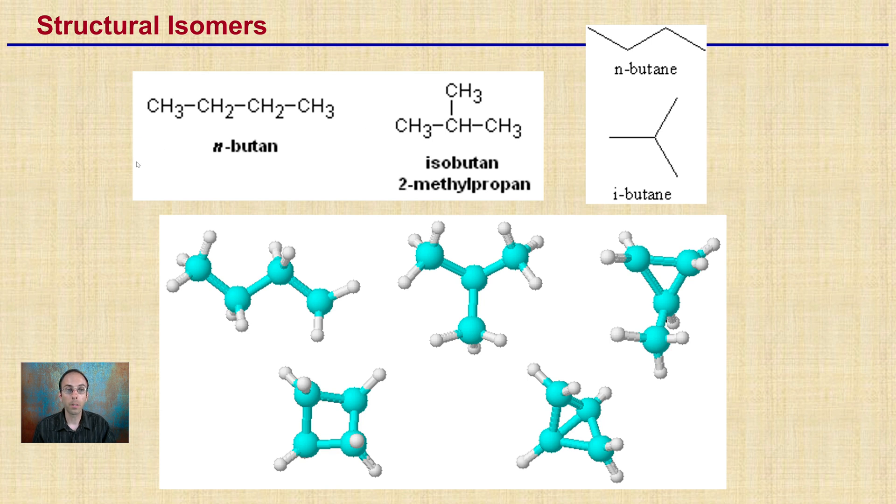Now, structural isomers we see here, n-butane, isobutane, and kind of the carbons are kind of highlighted here in the bright colors. We can see that if you count up the number of atoms, they're all the same, the same ratio, but they look very different. They're structurally different.